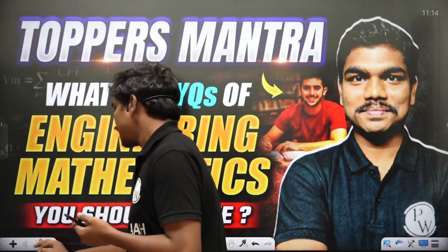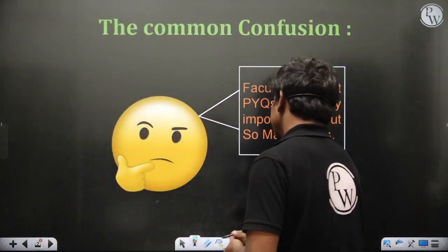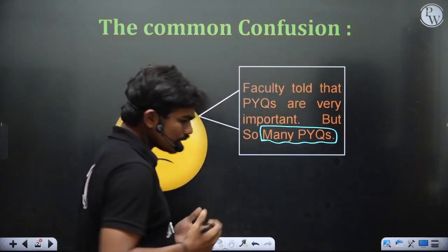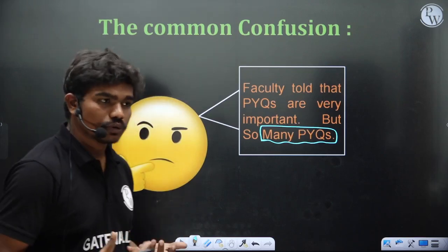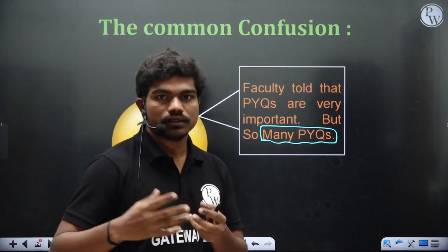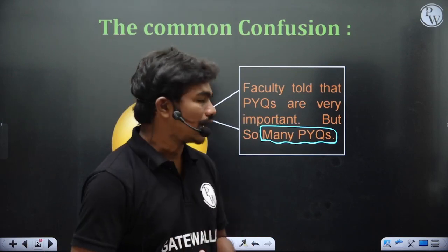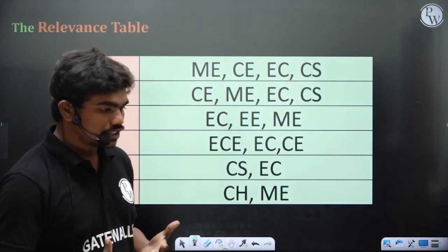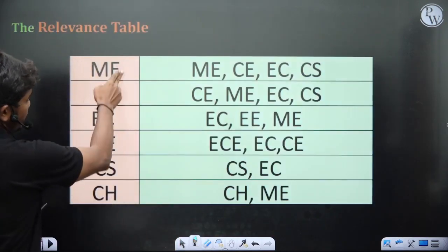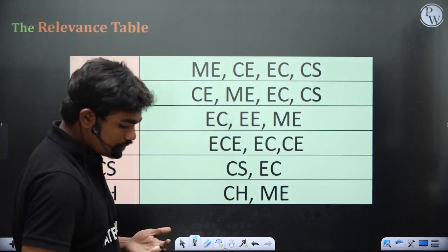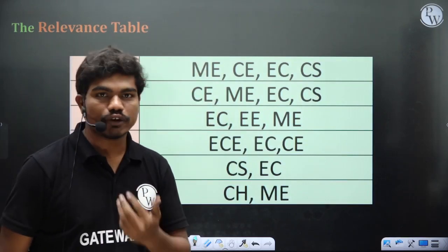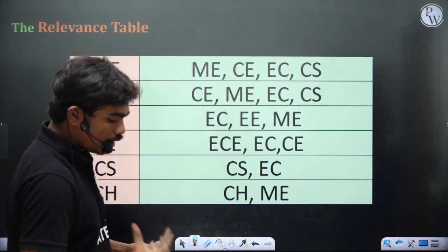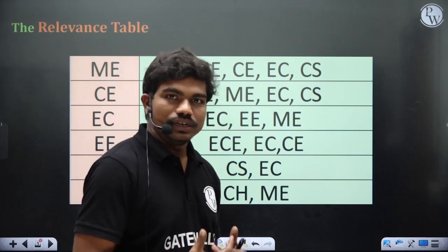This is the common confusion that all of you have — the PYQ count is very huge. Based on the analysis we have done, and also from the PYQ book recordings me and Chetan made, we figured out the most possible combinations for every branch. For example, if you are from mechanical, first of all you have to solve your home branch PYQs definitely. Then along with that, what other branch PYQs you can do is what I am covering here.